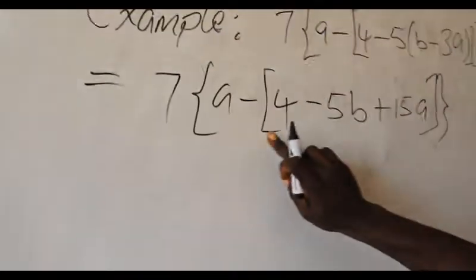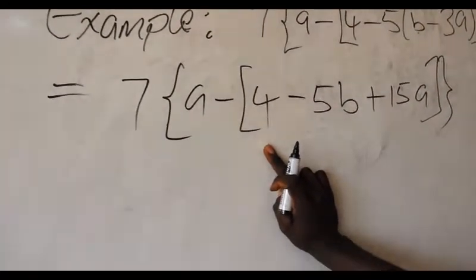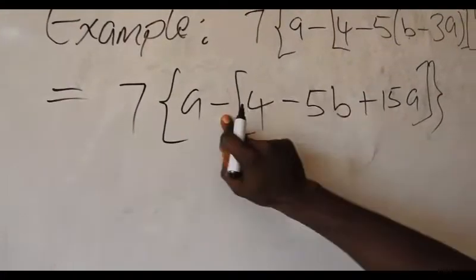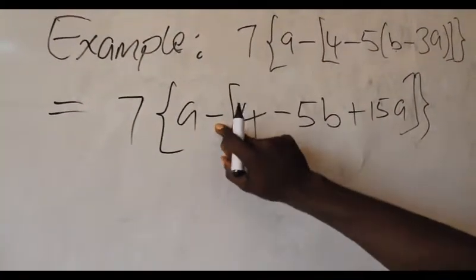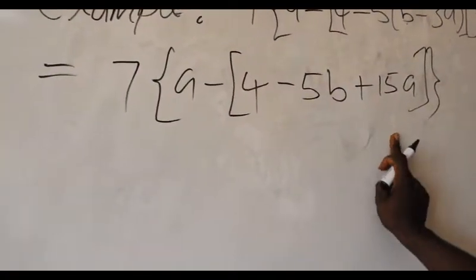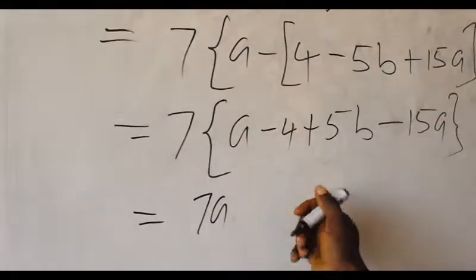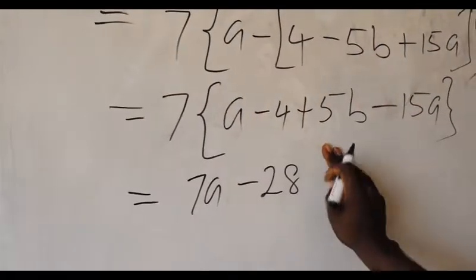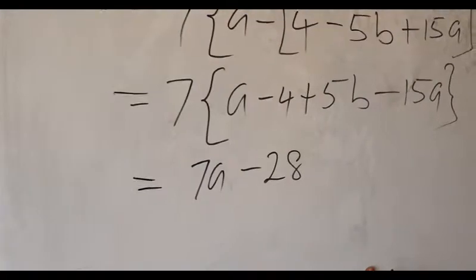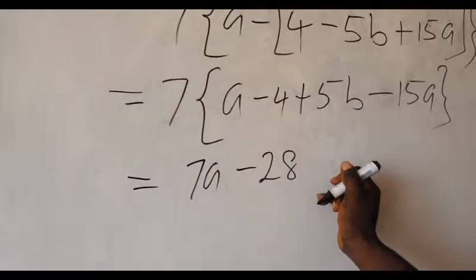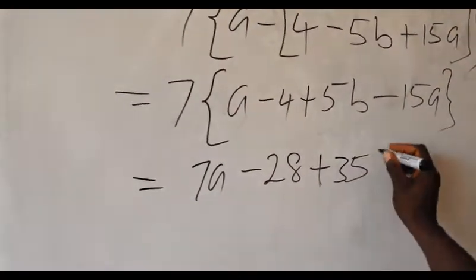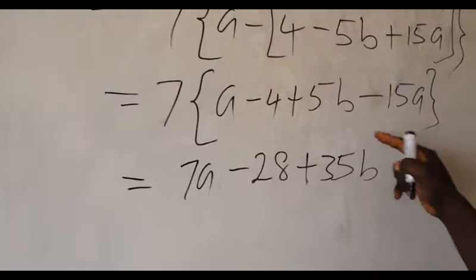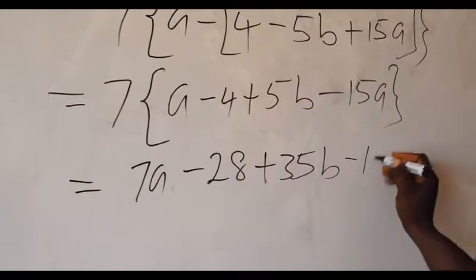The next thing we do is remove this bracket. Before this bracket, we notice there is a minus sign immediately before it, so this minus sign will multiply everything in the bracket. So 7 times minus 4 gives us minus 28. Then 7 times 5b gives us 35b, plus 35b. And 7 times minus 15a is minus 105a.